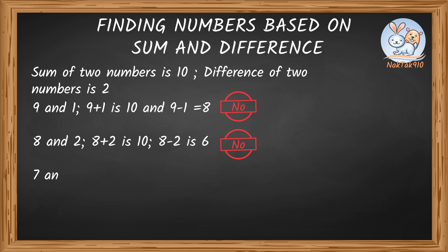How about 7 and 3? 7 plus 3 equals 10, and 7 minus 3 is 4. Not 7 and 3 either.